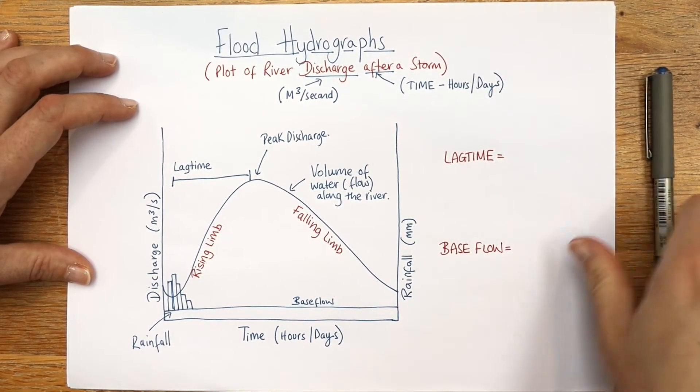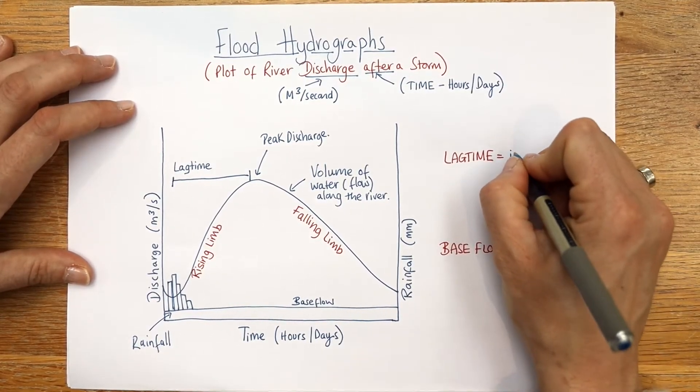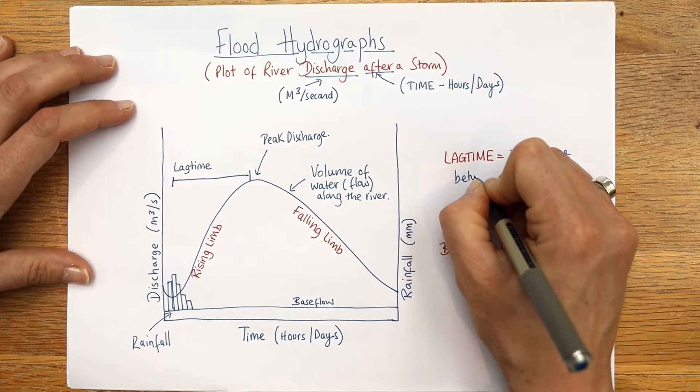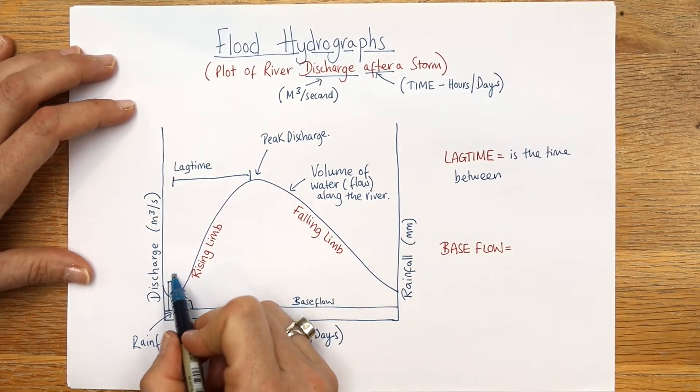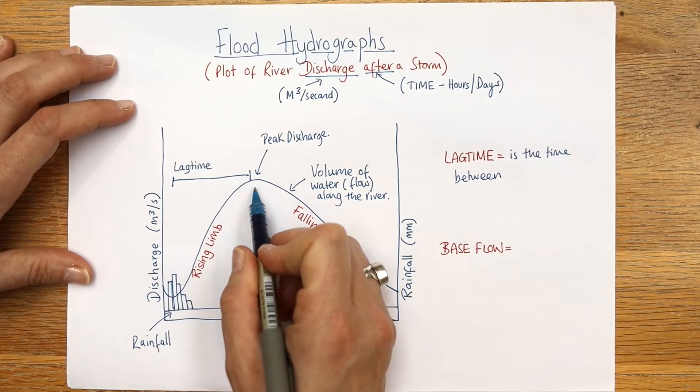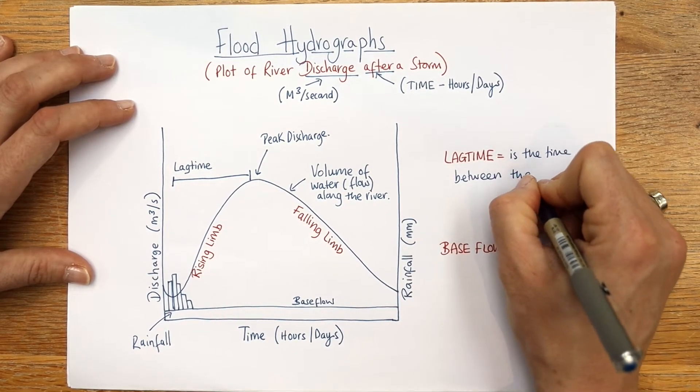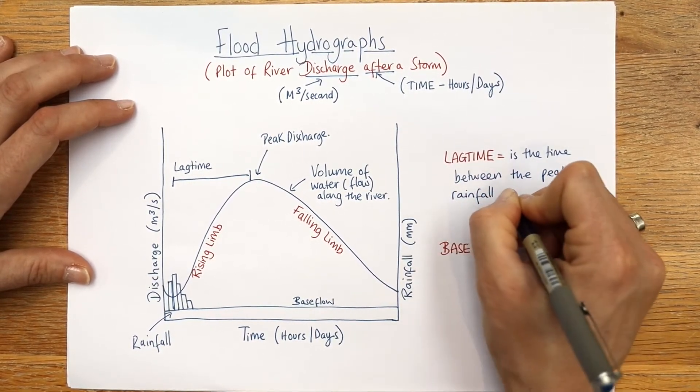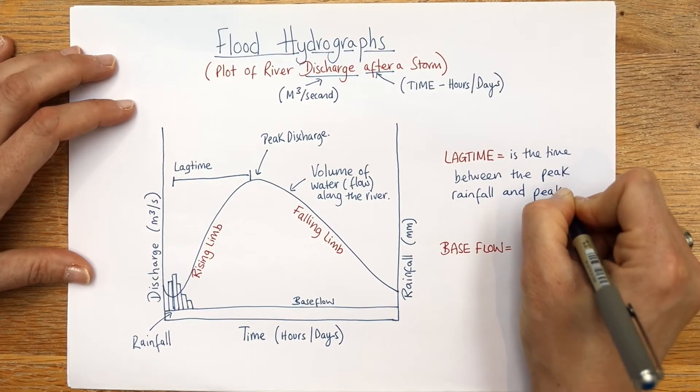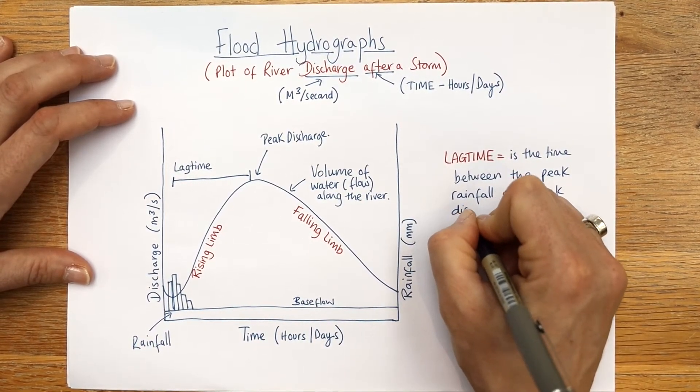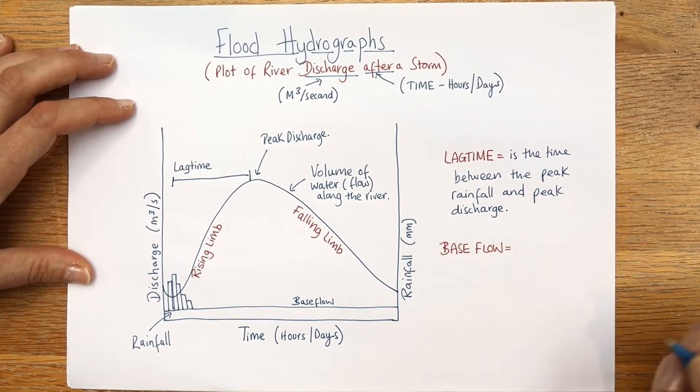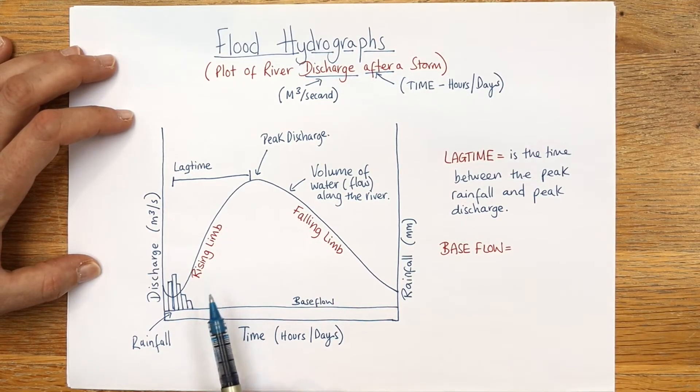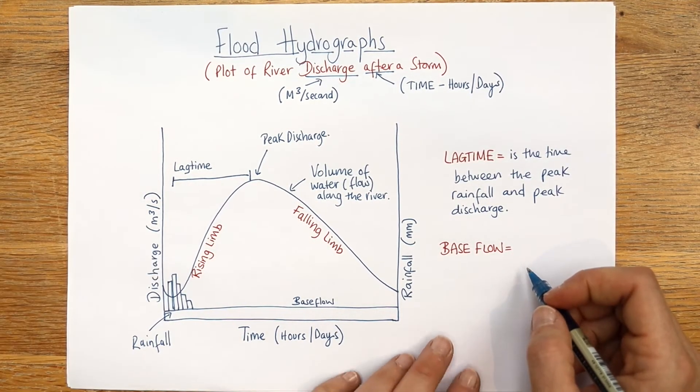And we've got our base flow. So lag time is the time between the peak rainfall - notice it here, lag time - and the peak discharge. That's also the time that people have to evacuate and to get sandbags and to really respond and react to what's going on with the weather.